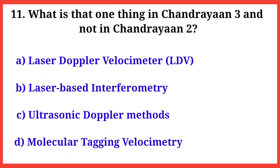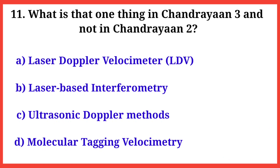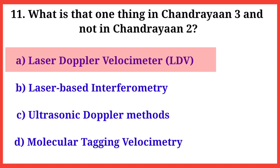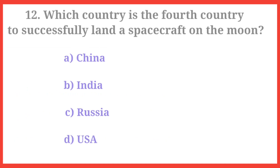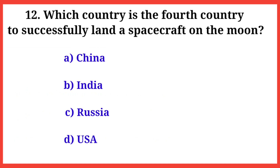Q11. What is the one thing in Chandrayaan-3 that was not in Chandrayaan-2? The right answer is option A: Laser Doppler velocimeter.